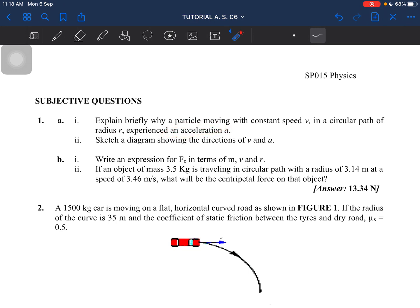The next question asks us to sketch a diagram which shows the directions of v and a. Question b asks us to write an expression for the centripetal force in terms of m, v, and r. Lastly, use this expression to calculate the centripetal force for the given variables.